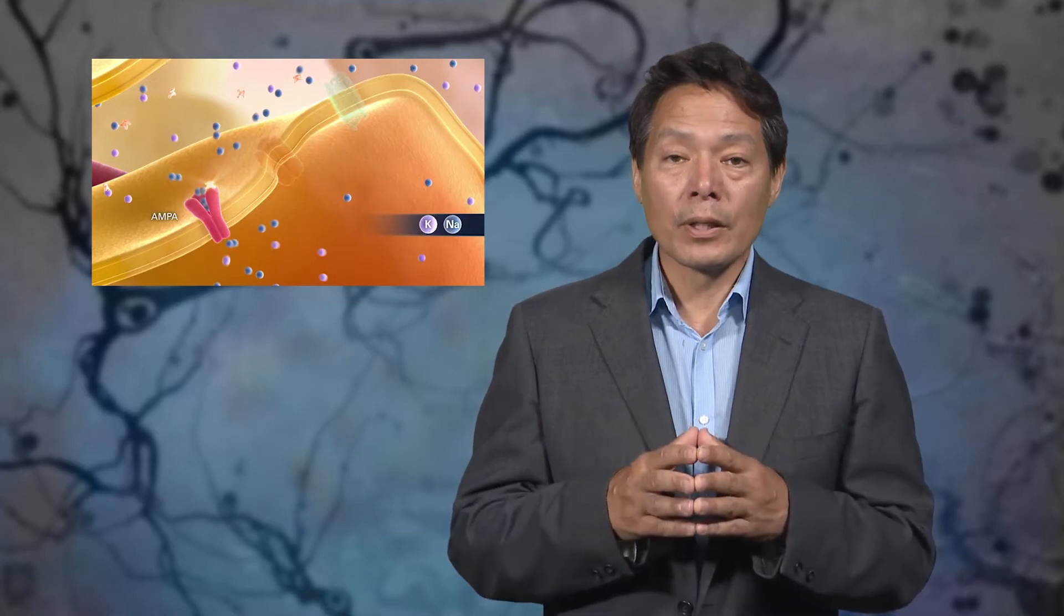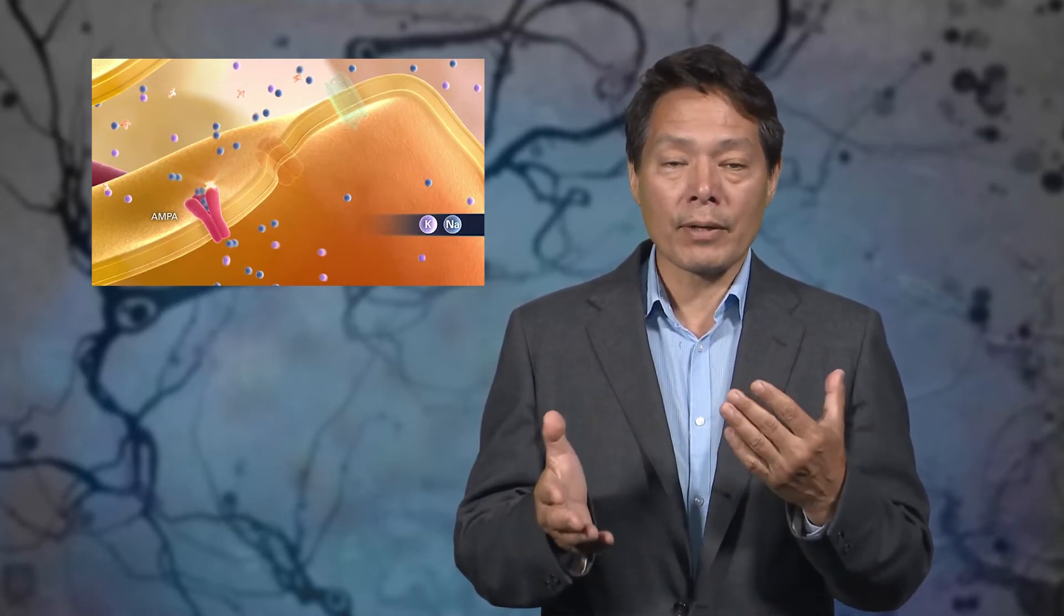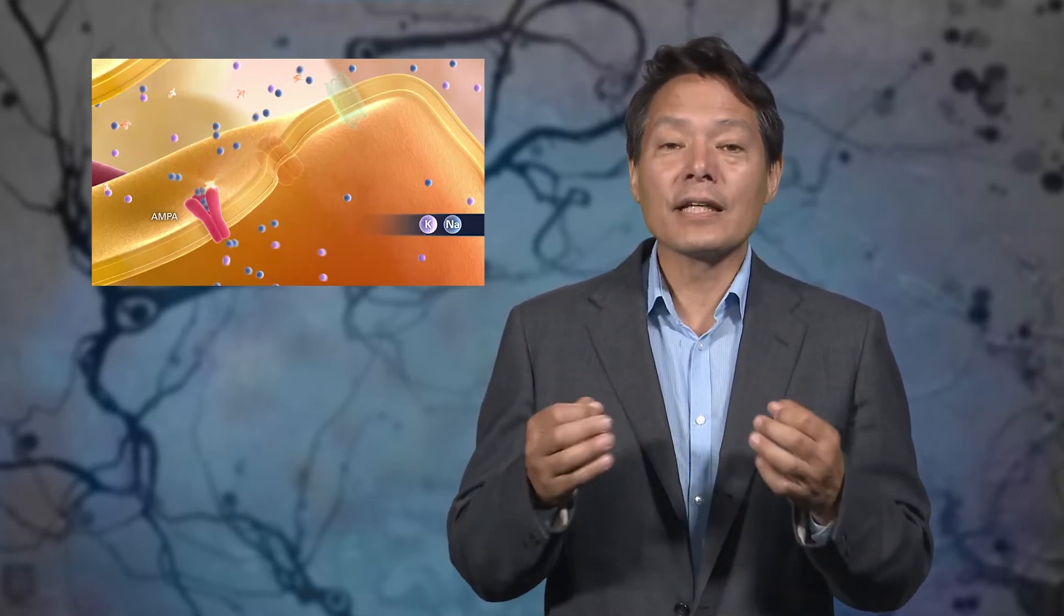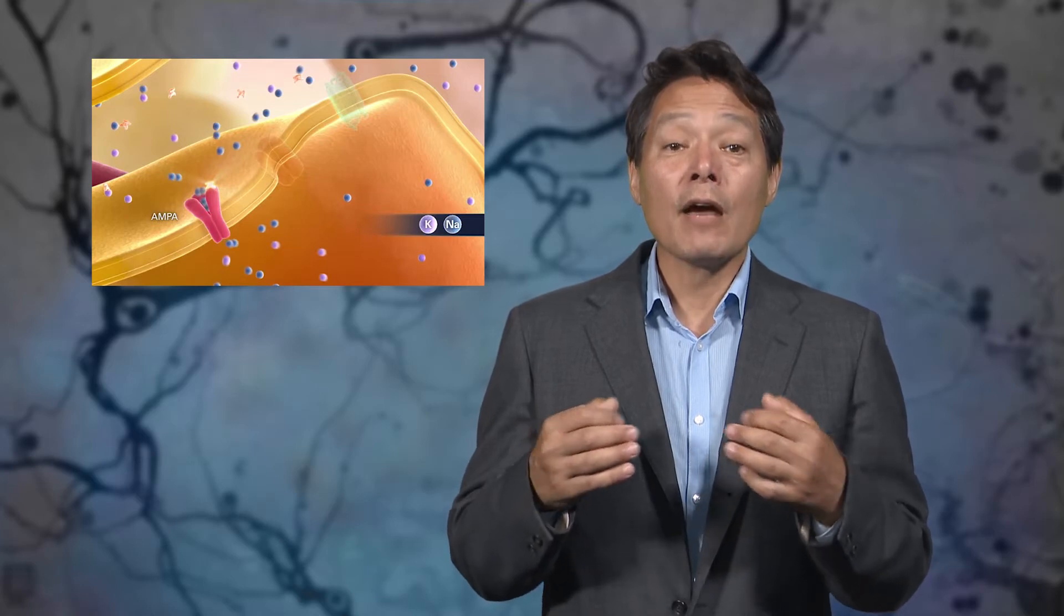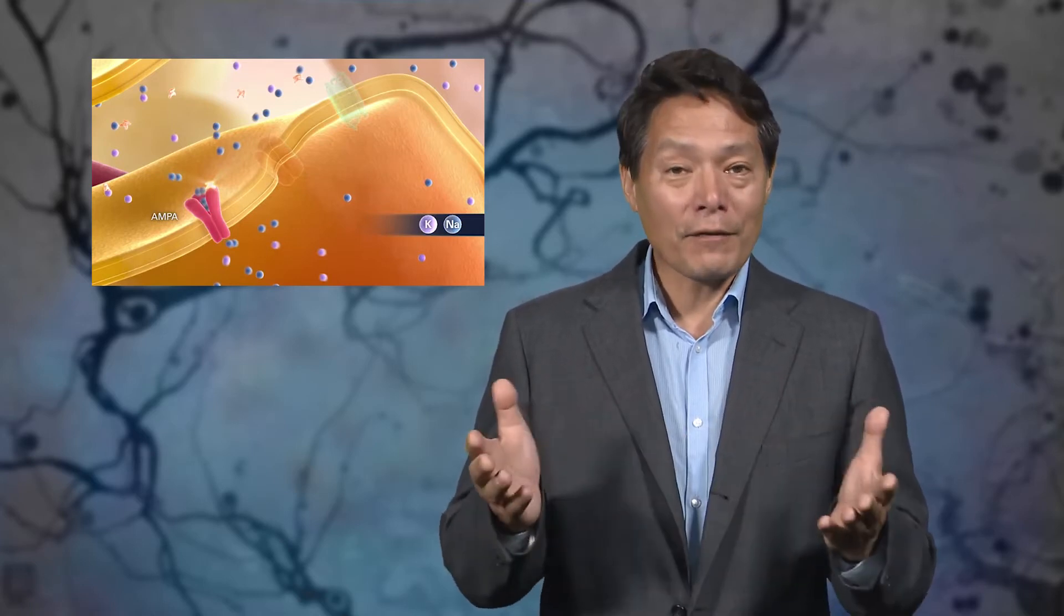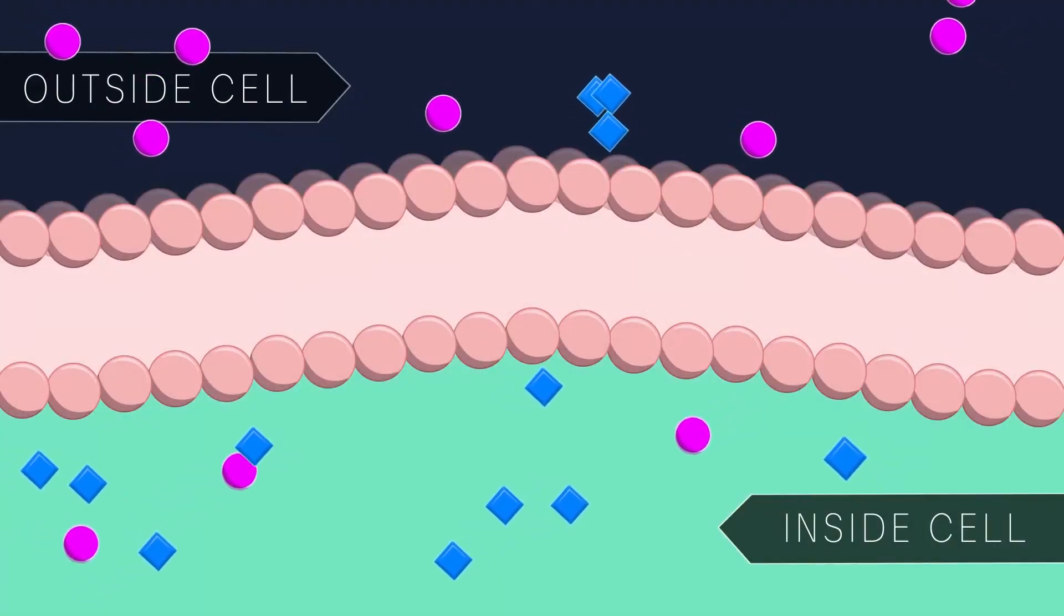A neuron would be at equilibrium when there is no difference in charge between the inside and outside of the membrane. This generally occurs only when a neuron is dead. When a neuron is alive, it actively keeps the voltage across its membrane far from equilibrium. This allows neurons to do important things like fire. Living neurons tend to have a negative resting potential. This means that even in the absence of input, neurons are far from equilibrium.